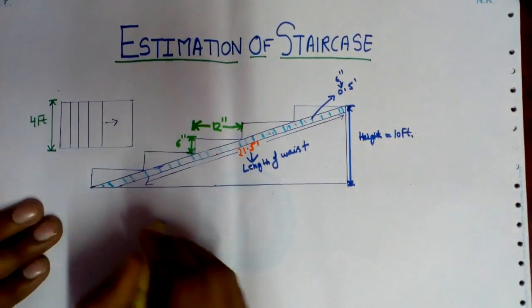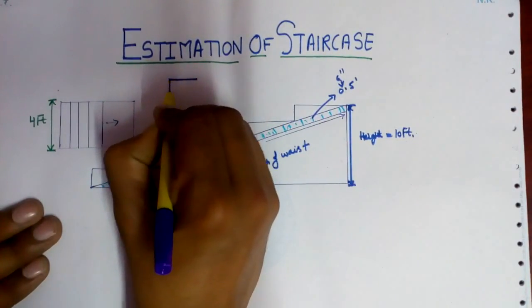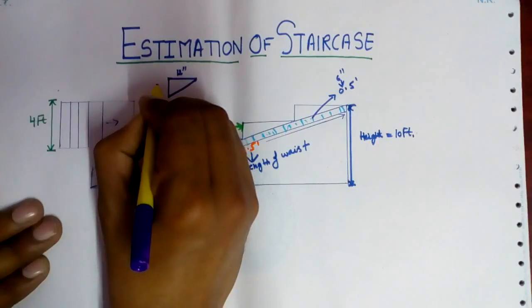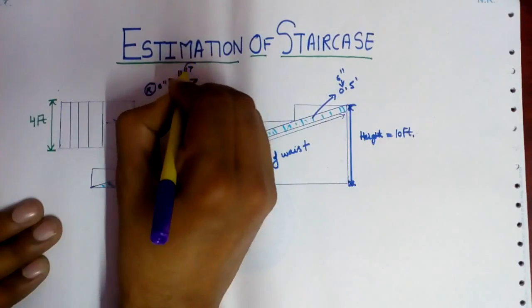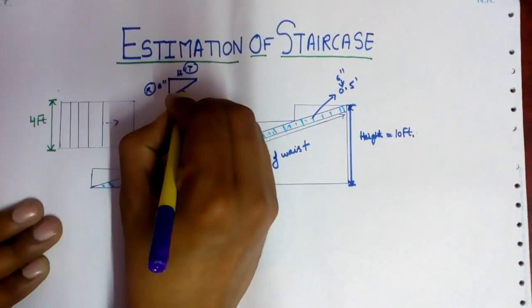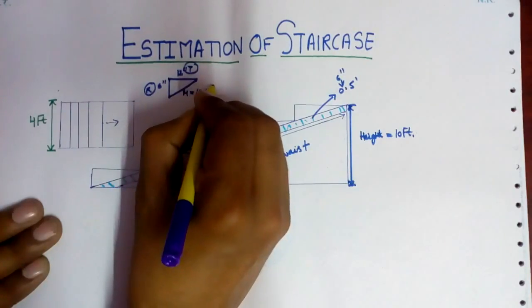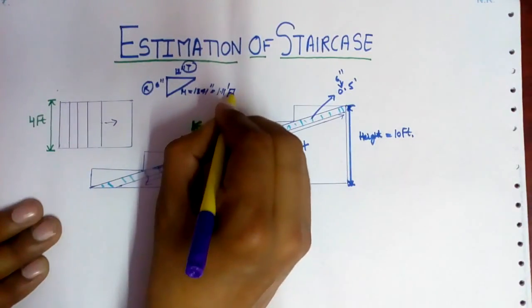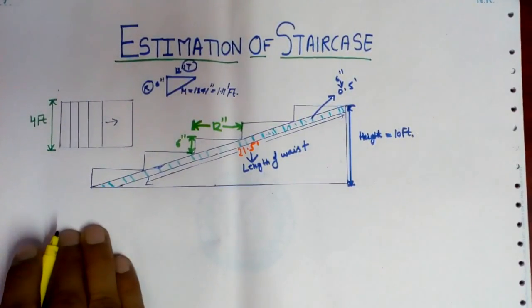The height is 10 feet. If you look at the tread, it is 12 inches, and the rise is 6 inches. By the Pythagoras theorem, the hypotenuse comes out to be 13.41 inches, which is equal to 1.1 feet.